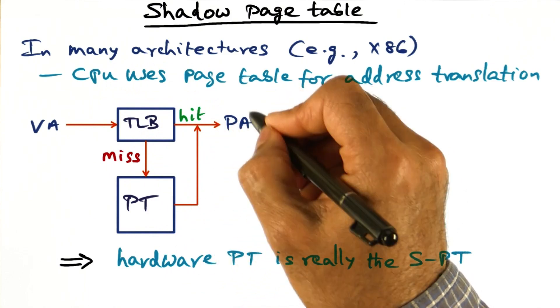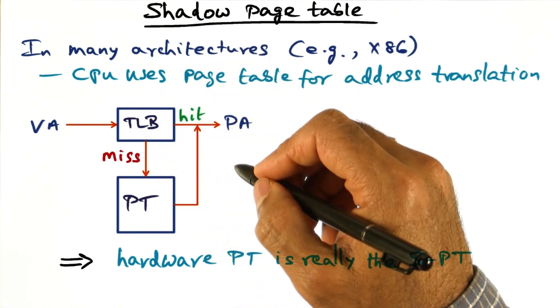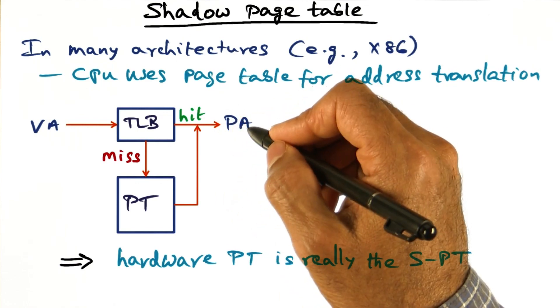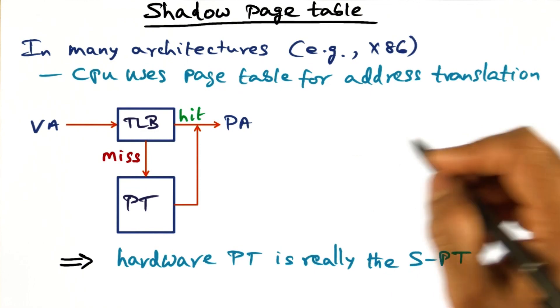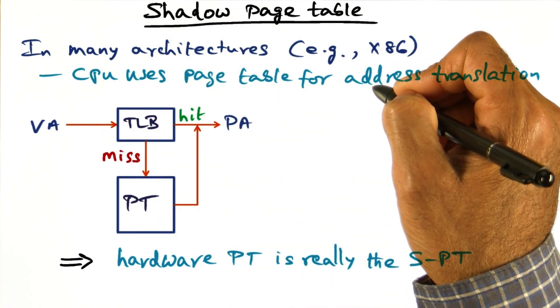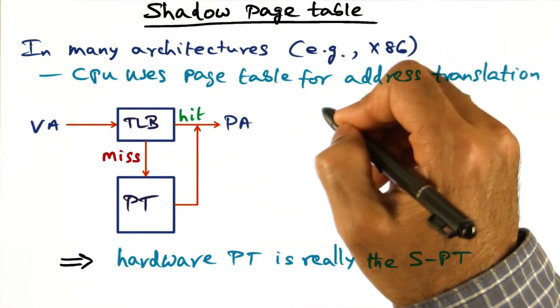Once it gets that, it will stash it in the TLB as well, and be able to generate the physical address that is specified by this particular virtual address. That's the way the CPU does the translation in many architectures.